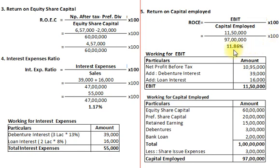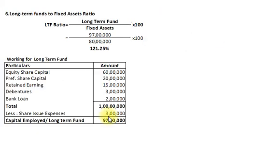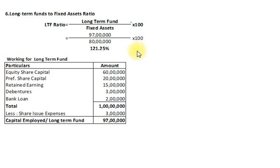ROCE = 11,50,000 / 97,00,000 × 100 = 11.86%. The sixth and final ratio is long-term funds to fixed assets ratio. Formula: long-term funds divided by fixed assets multiplied by 100. Long-term funds (capital employed) = Rs. 97,00,000. Fixed assets = Rs. 80,00,000. So the ratio = 97,00,000 / 80,00,000 × 100 = 121.25%. That's all, dear students. Thank you very much for watching this video lecture. We will soon meet with another example of ratio analysis.